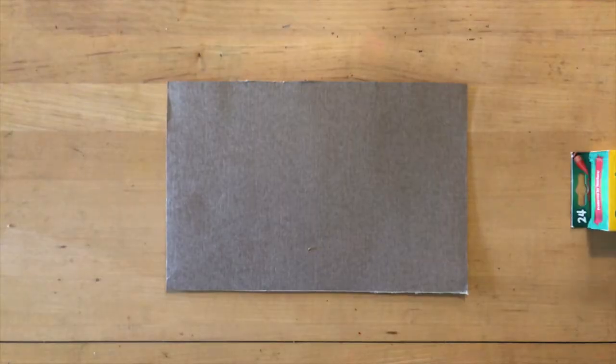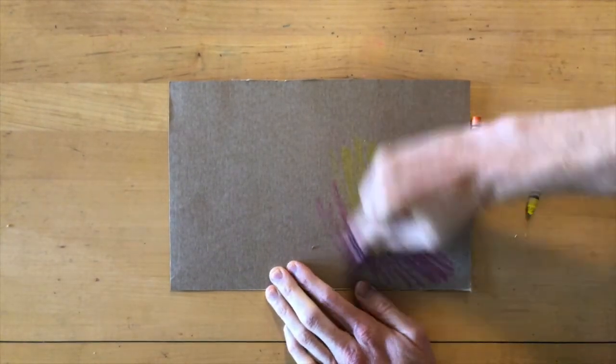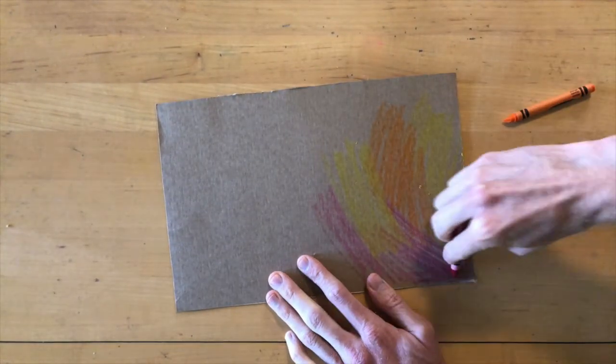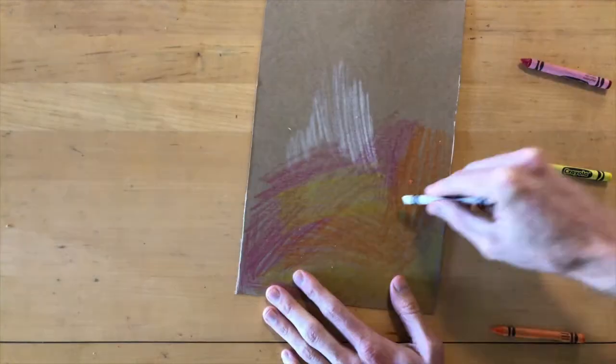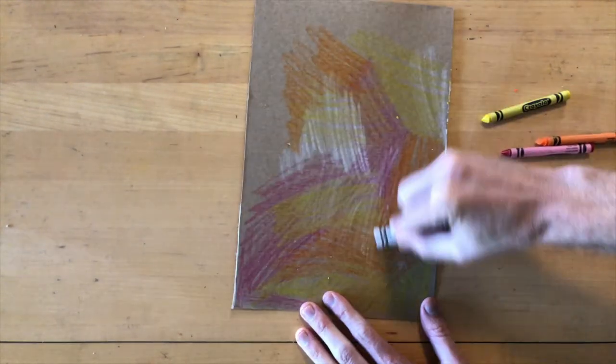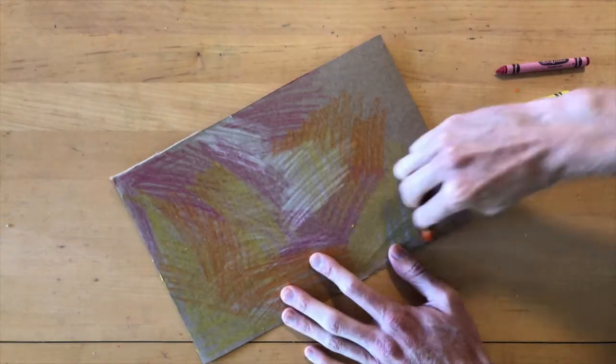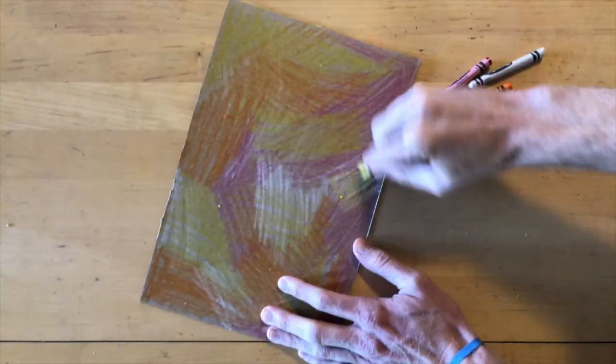Step 3: Now take out your crayons. You can choose whatever colors you'd like. What we're trying to do is apply crayon or the wax from the crayon all over our background. This will serve as a resist and allow us to scratch into it once we cover it with paint. It's important that we cover the entire surface with crayon.